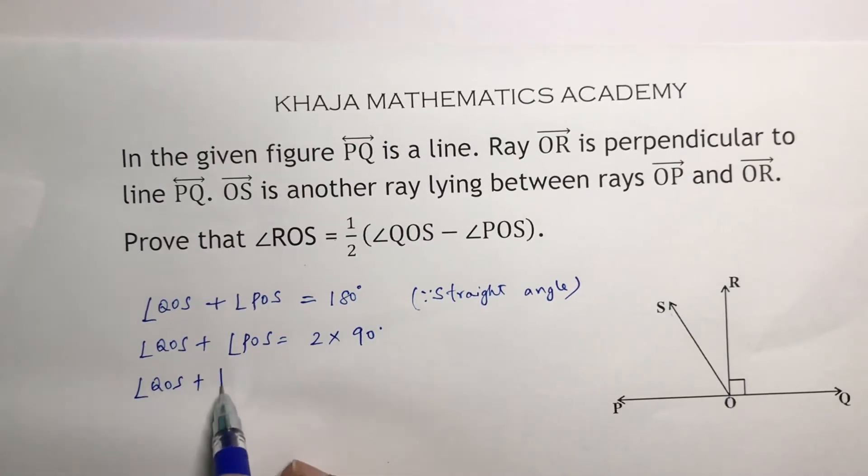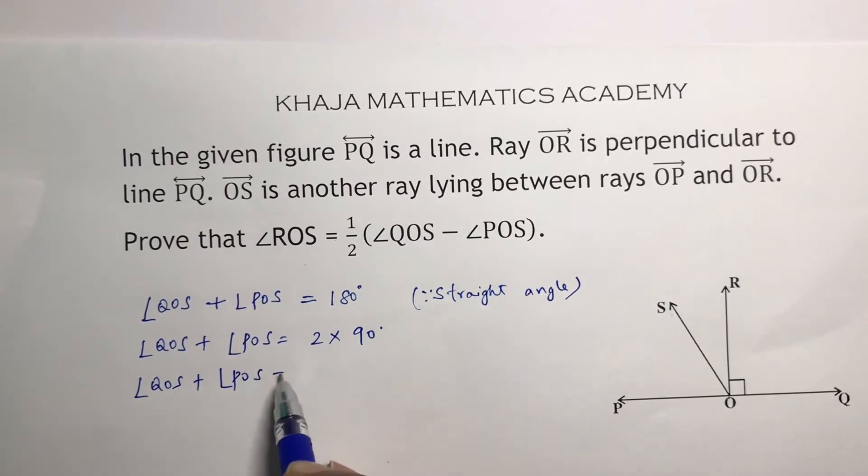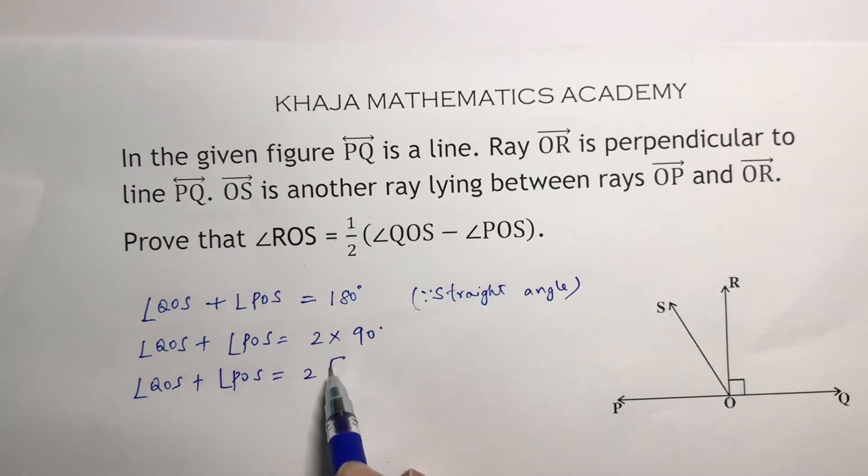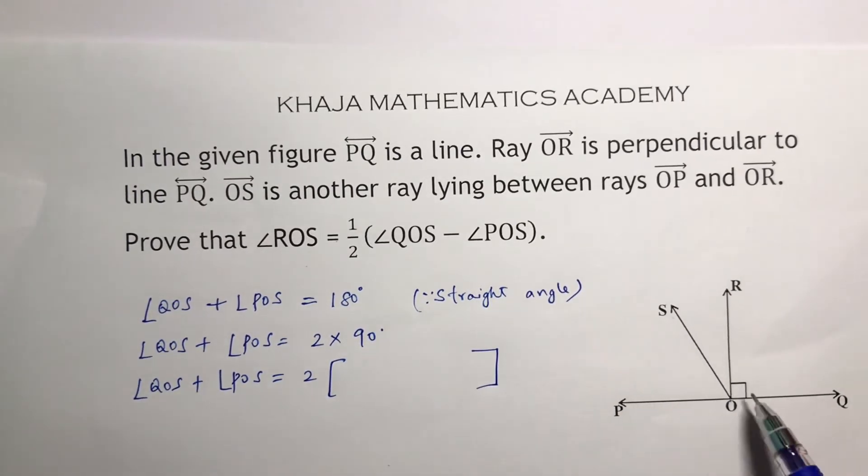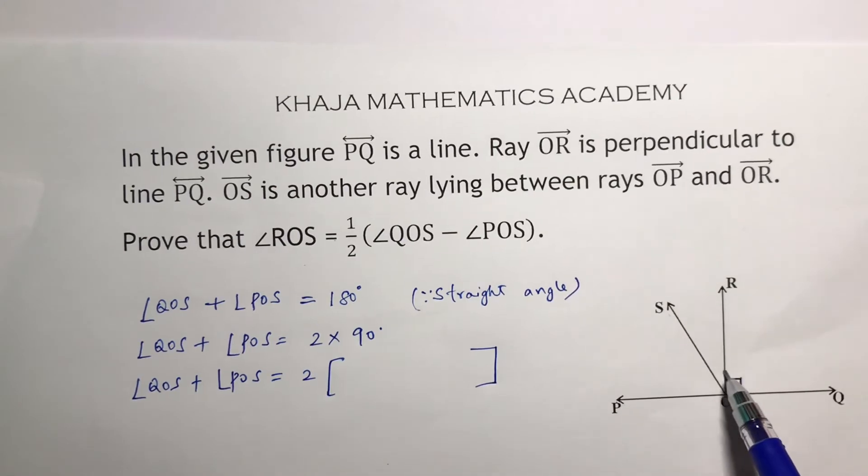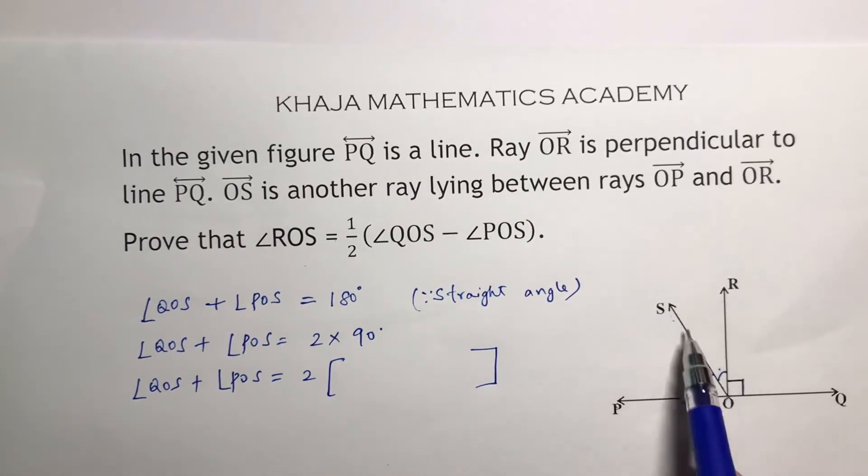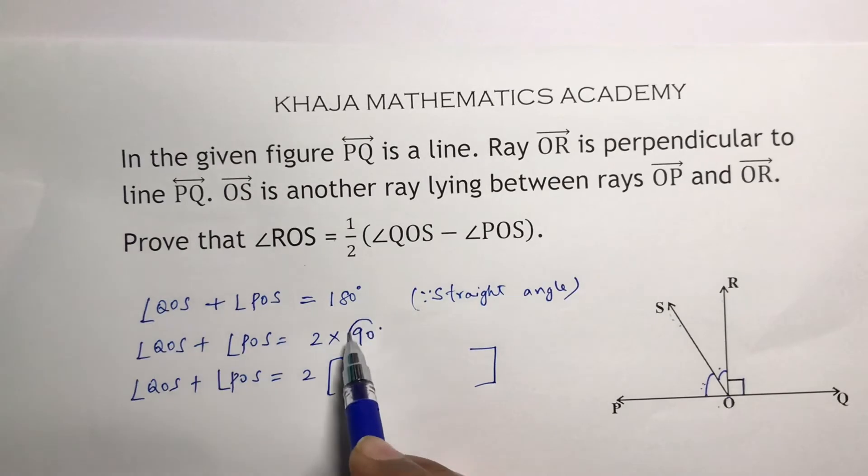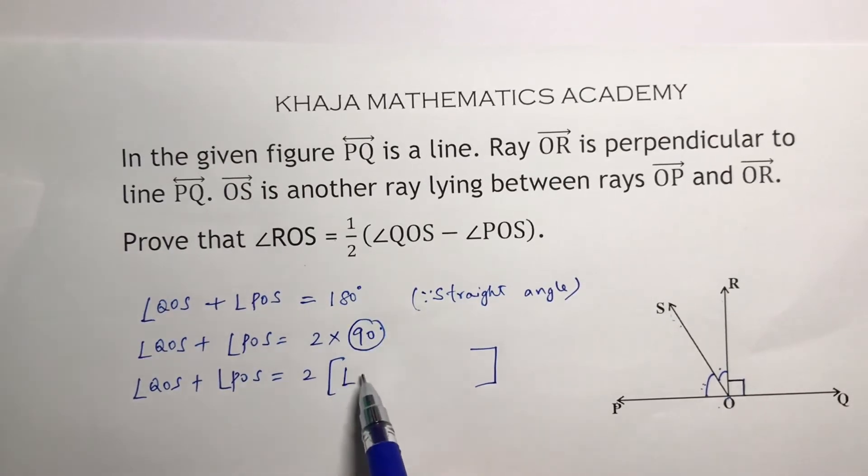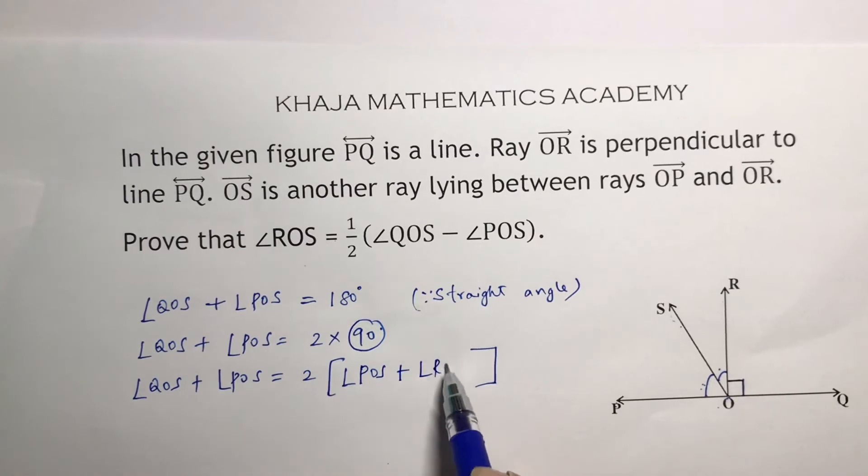QOS plus POS is 2 times 90. See, this angle is 90, so this one plus this one, these two angles also will add up to 90. So, POS plus ROS is 90, so in place of 90, I will write angle POS plus angle ROS.